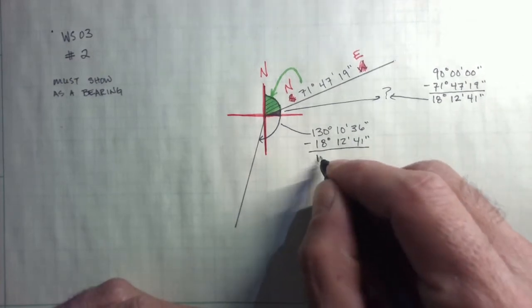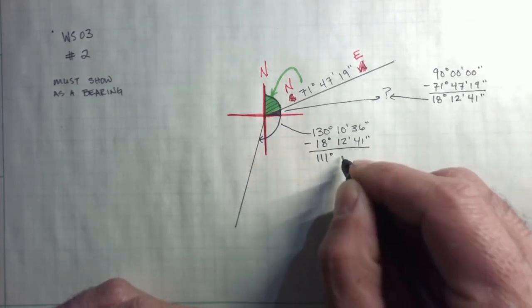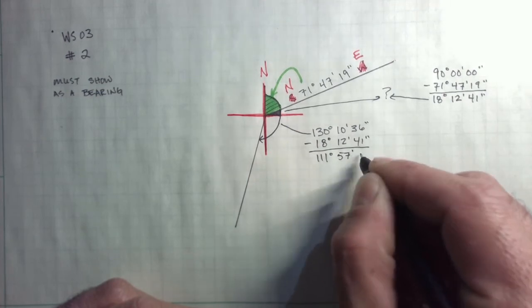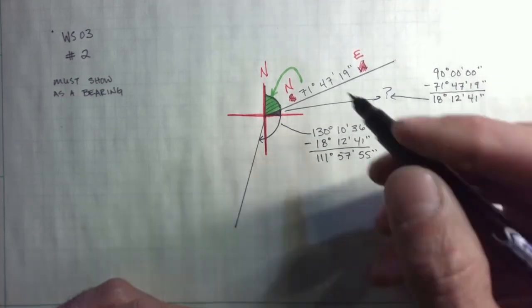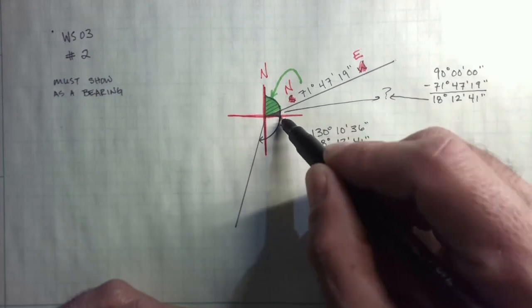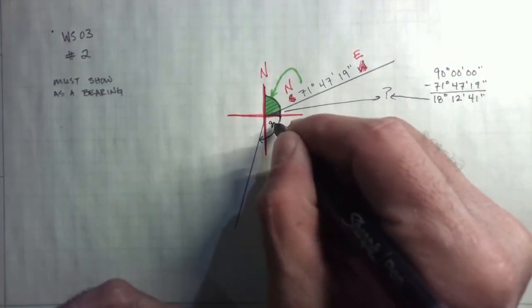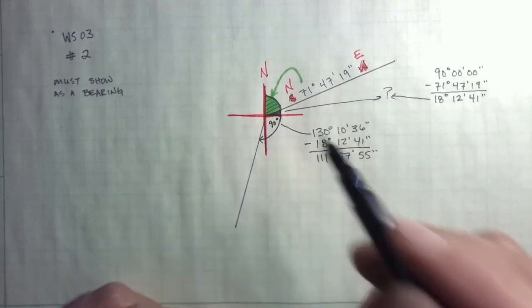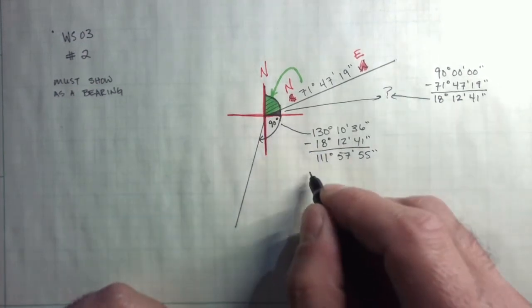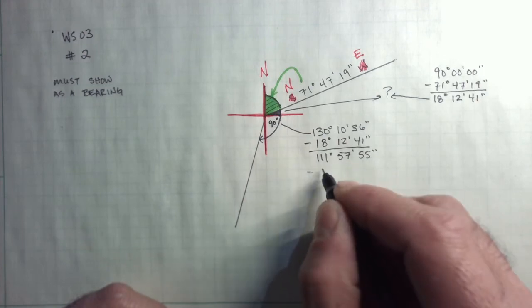If I do that subtraction, I'm left with 111 degrees, 57 minutes, 55 seconds. So that is from east to the line. And I know there's 90 degrees in that southeast quadrant. So I could take 90 degrees off of this remaining angle.